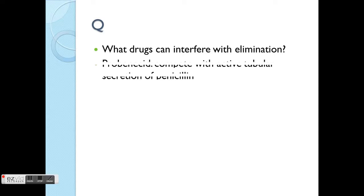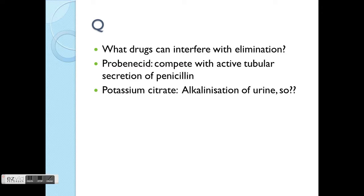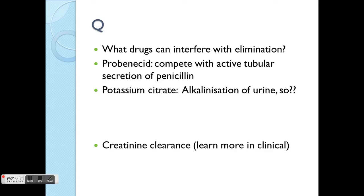There are a few other drugs that can interfere with elimination, such as probenecid, which is the most famous example. This drug can compete with the active excretion route of penicillin — when there's competition, it interferes with the elimination of penicillin. There are also drugs such as those causing alkalinization of urine, like potassium citrate. Refer to the absorption lecture about pH trapping for more detail.